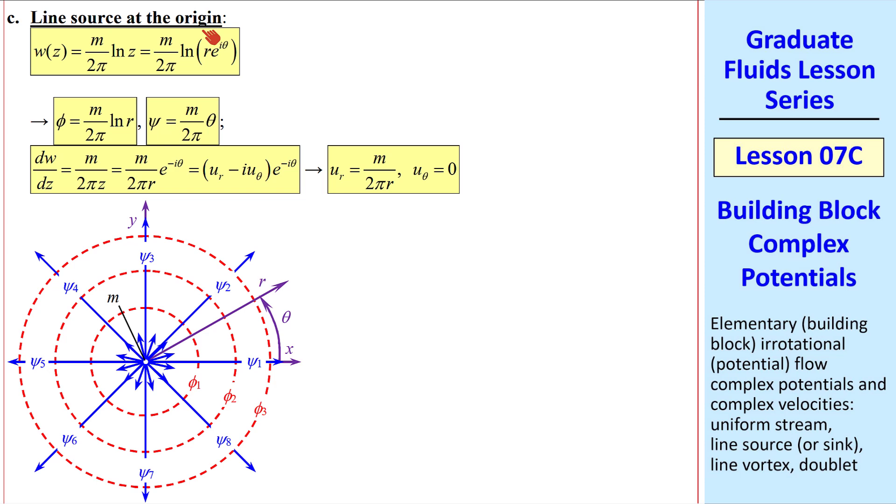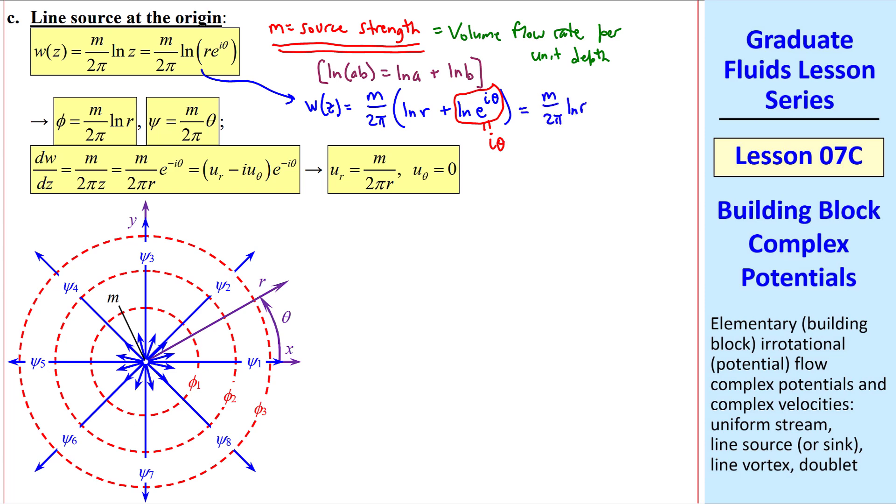Now consider a line source at the origin. Let's start with this complex potential, m over 2 pi, natural log of z, where m is the source strength. It turns out to be a volume flow rate per unit depth into the page, since this is a 2D problem. I note that many of these building block flows have three-dimensional counterparts. For example, here instead of a line source, we could have a point source. Recall the identity that natural log of ab is equal to the natural log of a plus the natural log of b. Thus we can write this as m over 2 pi, natural log of r, plus natural log of e to the i theta. But the log of e to the i theta is, of course, i theta itself. So w is m over 2 pi, natural log of r, plus i m over 2 pi theta. Again, w is defined as phi plus i psi. So this is phi, and this is psi. These agree with what I have typed here.